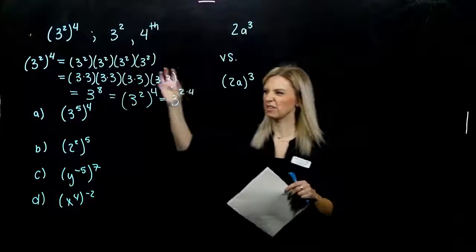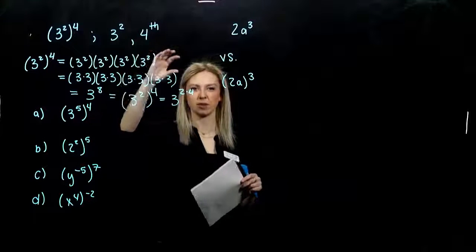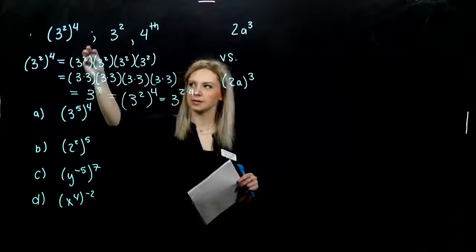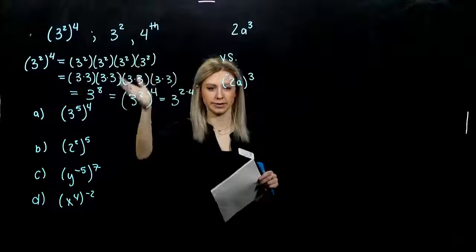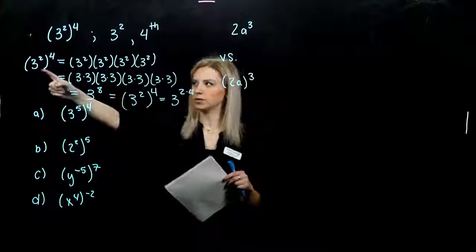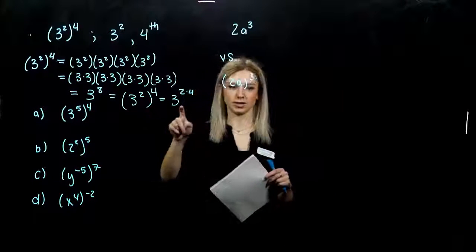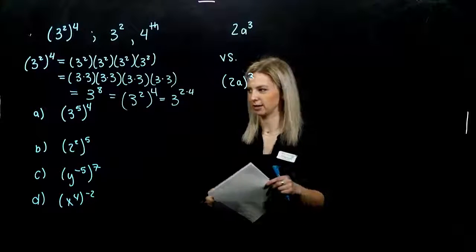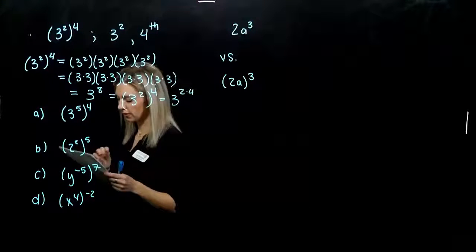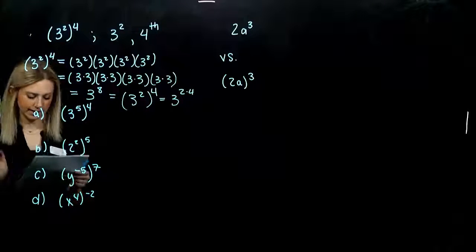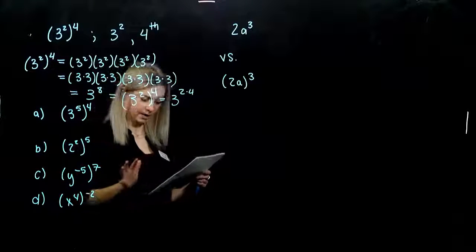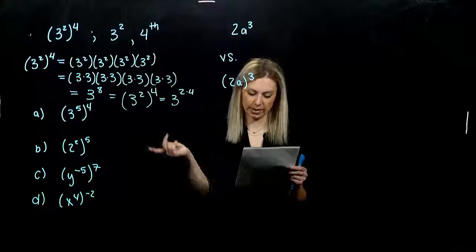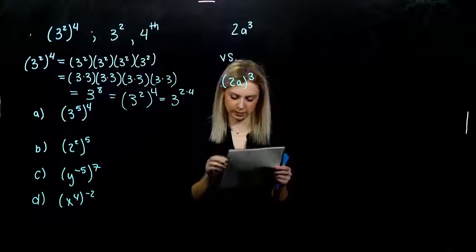So instead of having to write out every single step and break down each base and power repeatedly, multiplying the exponents will get us there faster. When I raise a power to a power, I multiply the exponents together. This holds for any real number a and integers m and n — they don't have to be positive. When we raise a power to a power, we multiply the exponents together.